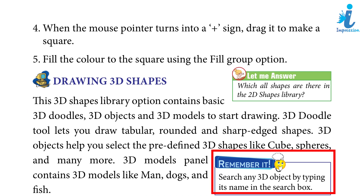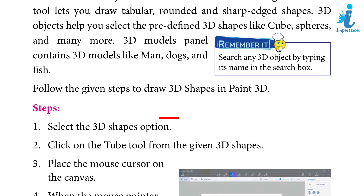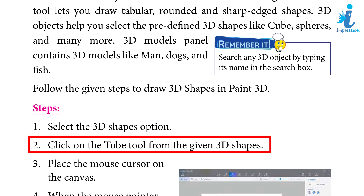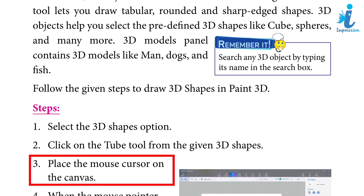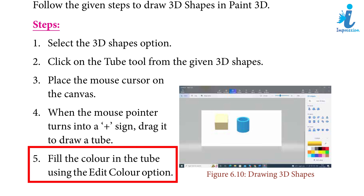Remember it! Search any 3D object by typing its name in the search box. Follow the given steps to draw 3D shapes in Paint 3D. Step 1: Select the 3D Shapes option. Step 2: Click on the Tube tool from the given 3D shapes. Step 3: Place the mouse cursor on the canvas. Step 4: When the mouse pointer turns into a plus sign, drag it to draw a tube. Step 5: Fill the color in the tube using the Edit Color option.